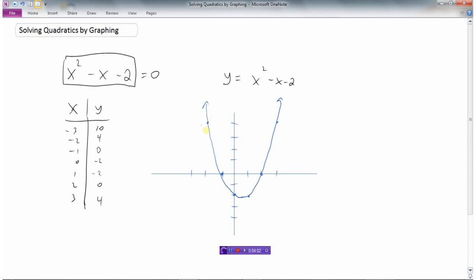And we would have a sketch of our graph. Now we're looking for where this thing equals 0. So we would have to look on our graph and we would see, okay, right here and right here. This is where the function, y equals x squared minus x minus 2, equals 0. We call these the zeros.